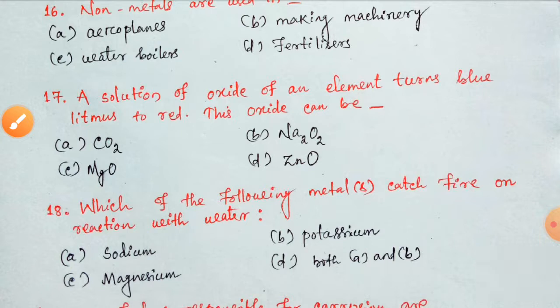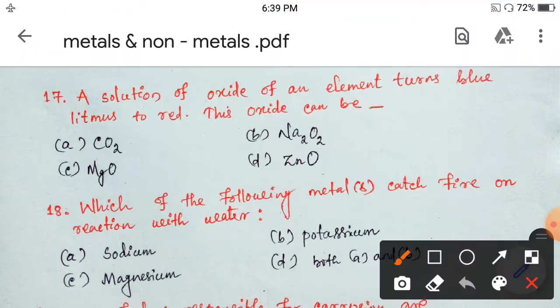Next. A solution of oxide of an element turns blue litmus to red. This oxide can be oxide of carbon, oxide of sodium, oxide of magnesium or oxide of zinc. That element turns blue litmus to red, meaning it is acidic in nature. We know that always non-metal oxides form acidic oxides. Magnesium, sodium and zinc are metals. Only oxides of carbon, that is your non-metal, and it forms acidic oxide. So option A is correct.